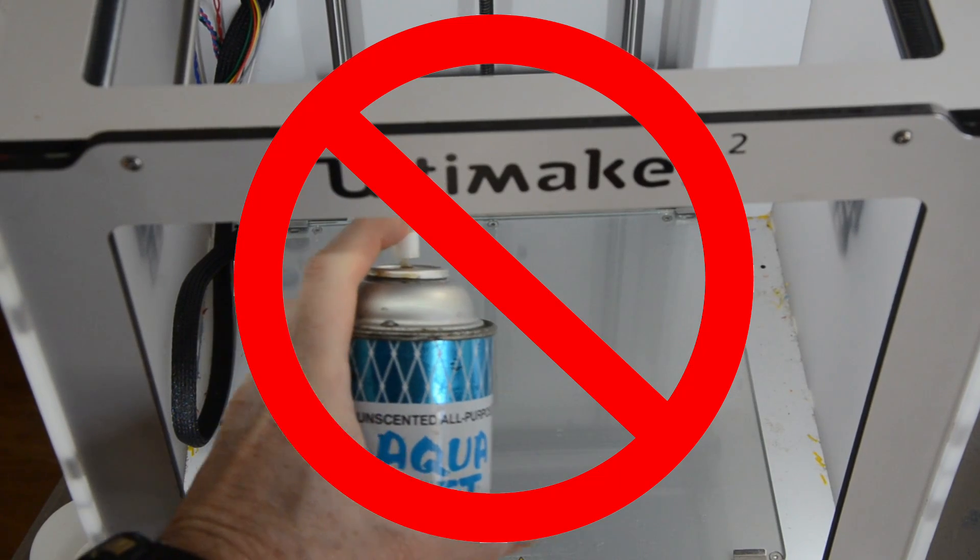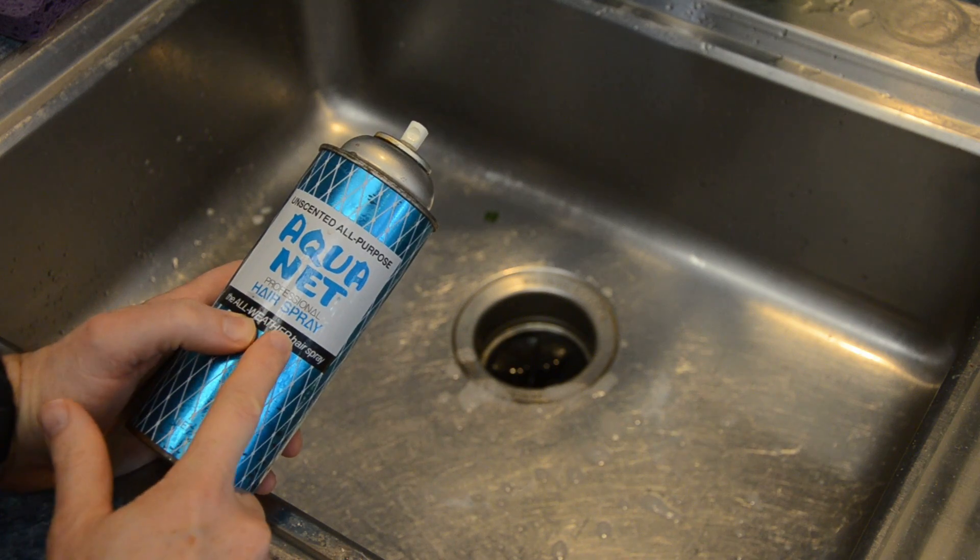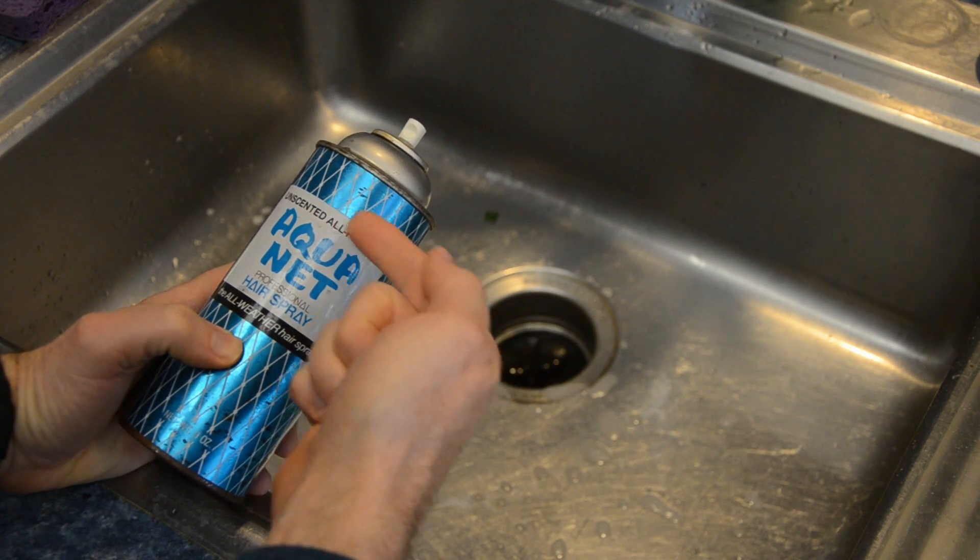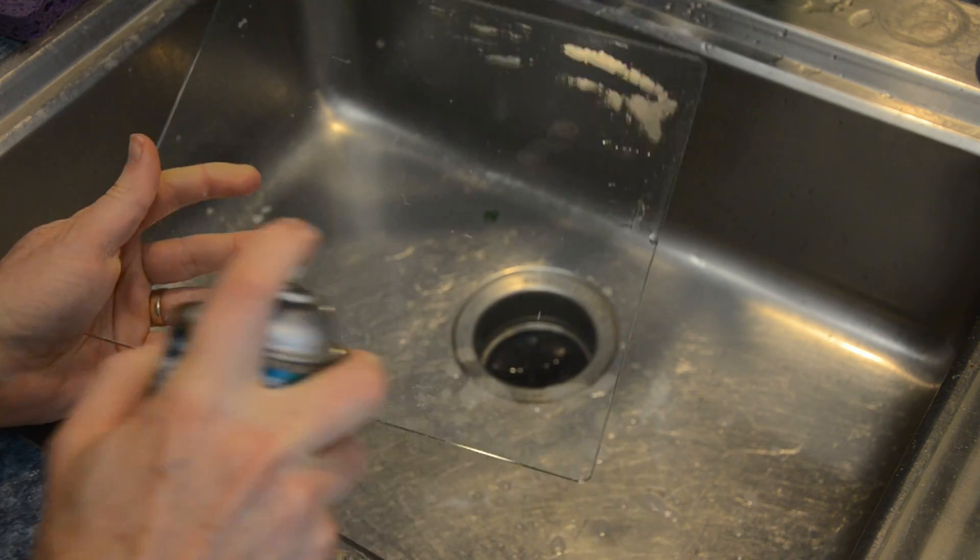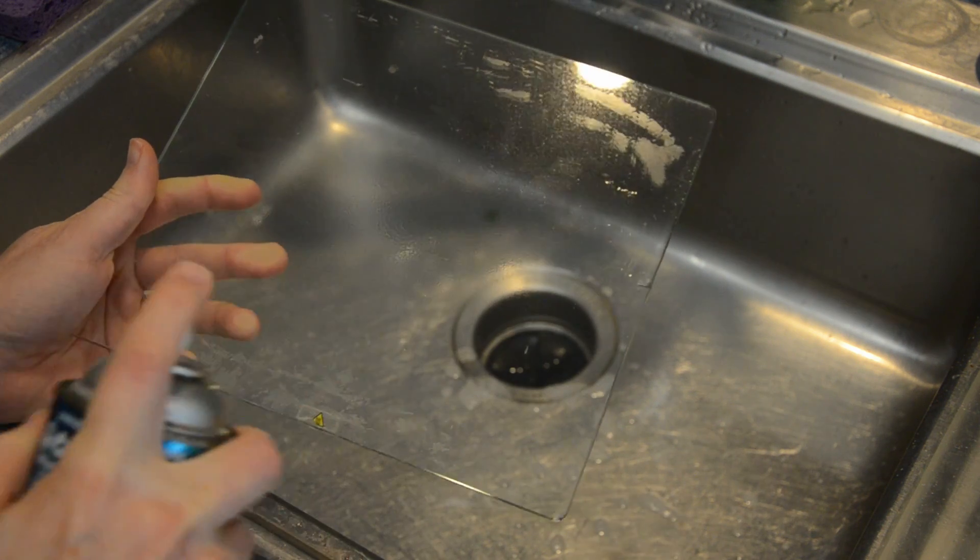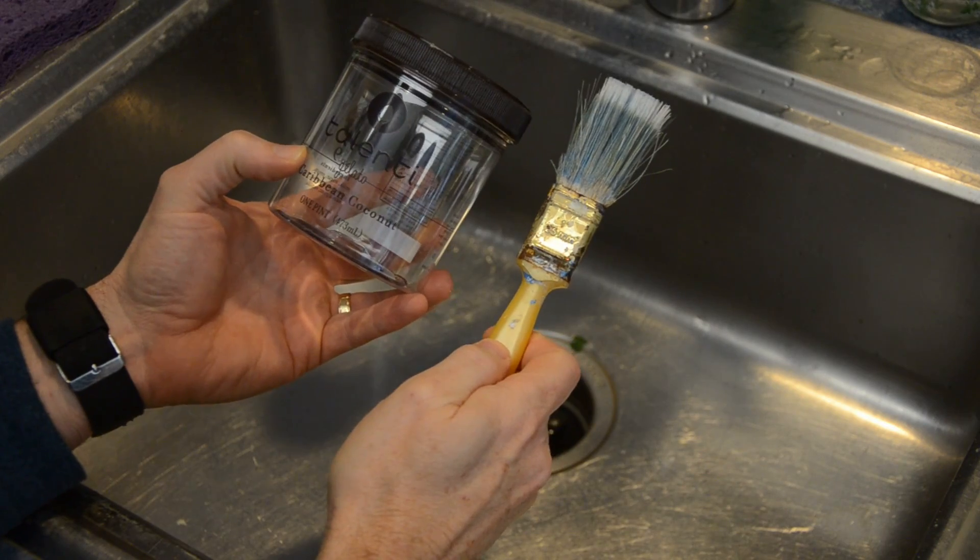Hairspray is another PVA glue, but don't use it in the printer like this. You want to do it in the sink like this. I use Unscented, it's the blue Aquanet. It's a great PVA glue to use. You'll see when you spray it on, it looks wet. You can see it looks kind of wet. And then the same thing, you heat it up and dry it out.